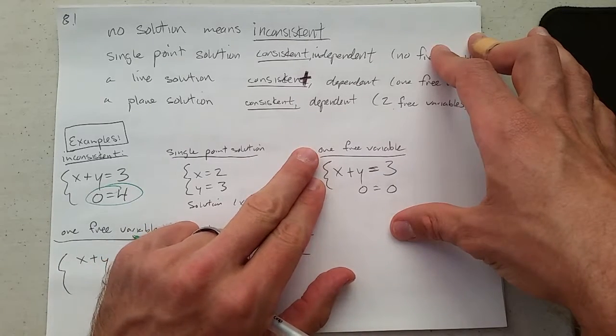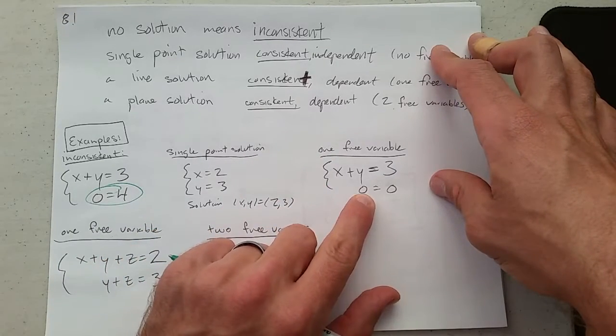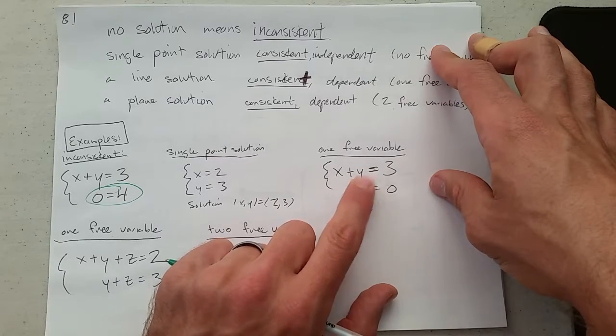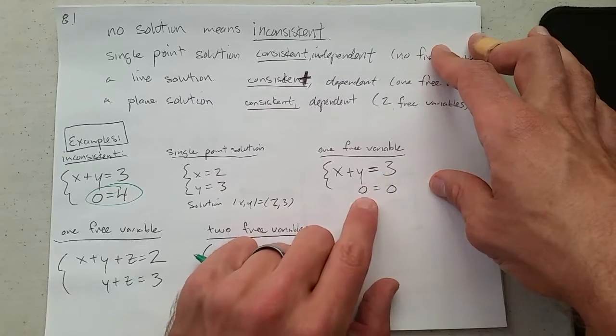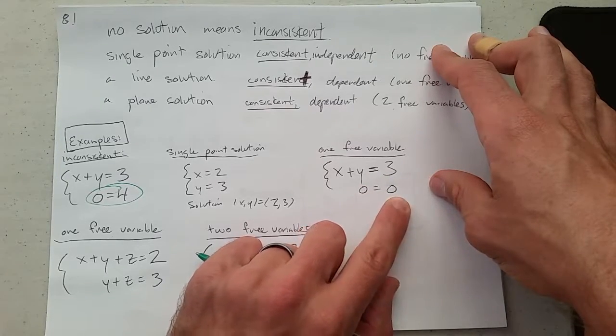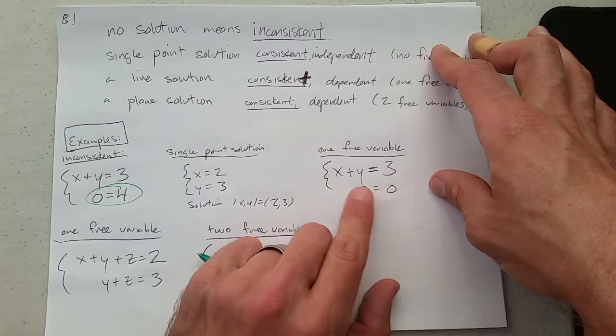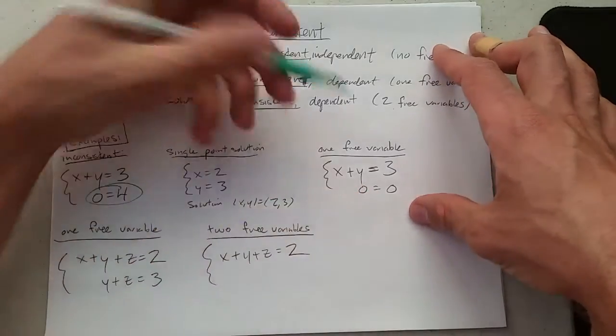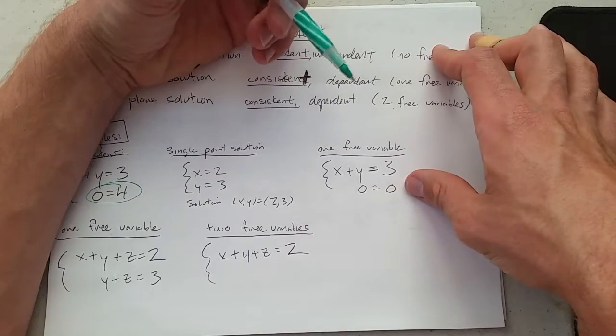One free variable, what does that look like? X and Y could be certain values to make this one true. Doesn't matter what X and Y are to make 0 equal 0. X and Y have no effect on 0.